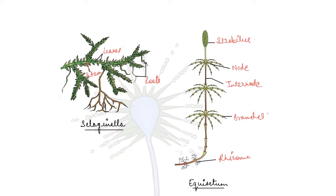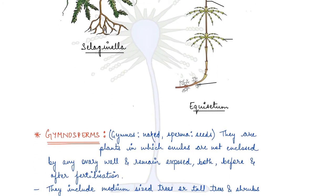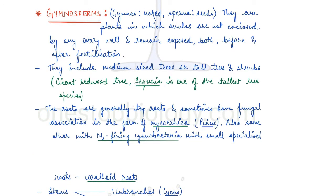Next we move to gymnosperms. Gymnosperms basically have naked seeds — that is how they got their name. 'Gymnos' means naked and 'sperma' means seed. They are plants in which ovules are not enclosed by any ovary wall and remain exposed both before and after fertilization. They include medium-sized trees, tall trees and shrubs. The giant redwood tree, one of the tallest tree species, is Sequoia.